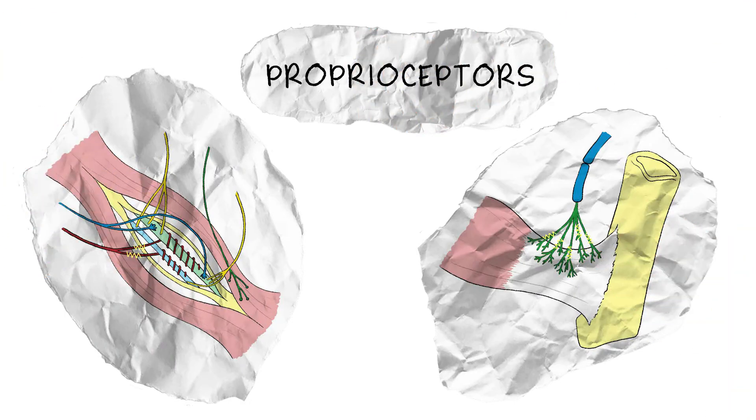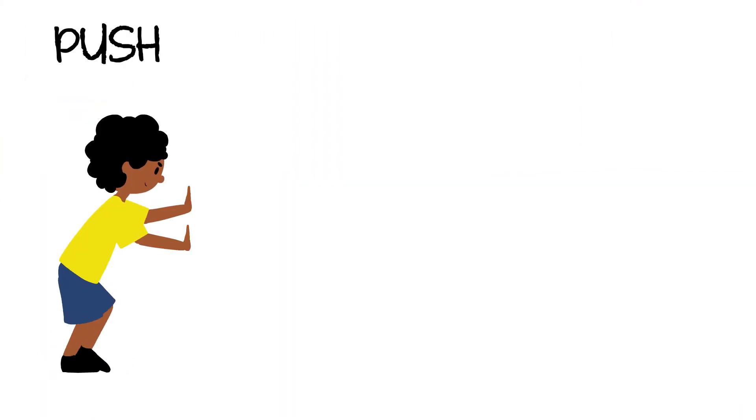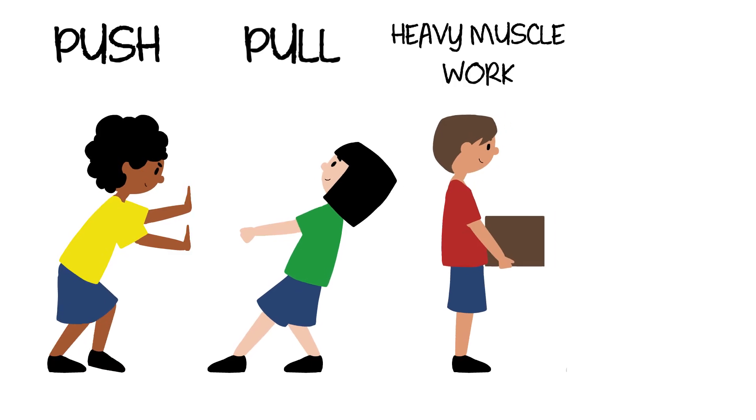These are the proprioceptors in muscles and in the tendons. They respond to push, pull, heavy muscle work, and stretch.